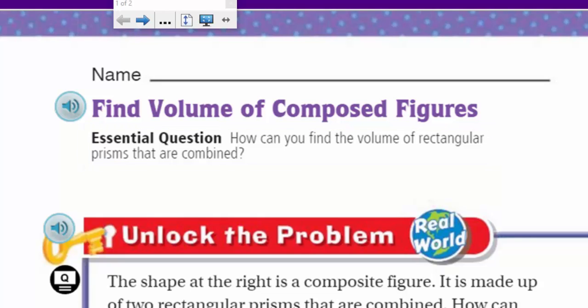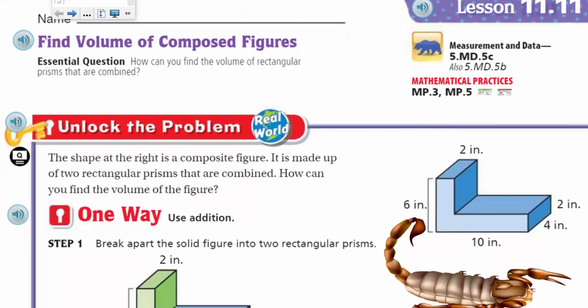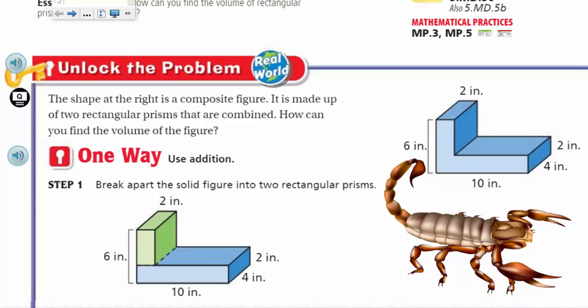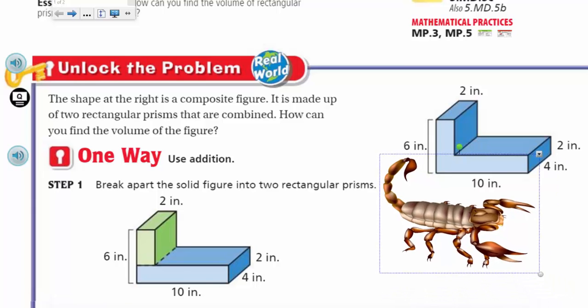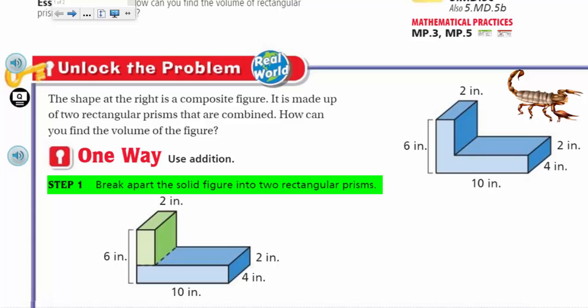And if you look at our essential question, which is our learning target, my friends, we are learning to target. No, we are targeting to learn. You might want to give that one up. Okay, so our essential question is how can you find the volume of rectangular prisms that are combined? Let's go ahead and unlock the problem. It says the shape at the right is a composite figure. It is made up of two rectangular prisms that are combined. How can you find the volume of the figure?